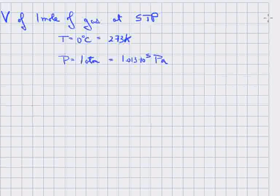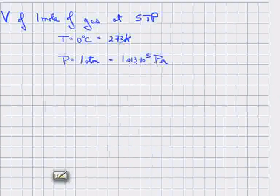So what's the volume of one mole of gas at STP? STP stands for Standard Temperature and Pressure, which is defined to be zero degrees centigrade, that translates to 273 kelvin, and one atmosphere, 1.013 times 10 to the 5 pascal.